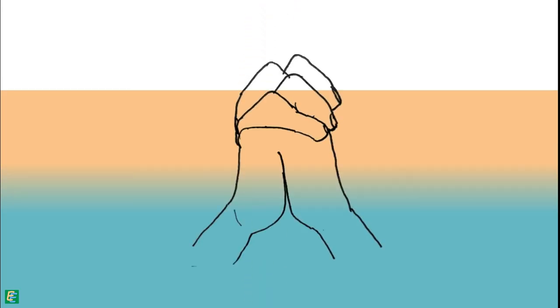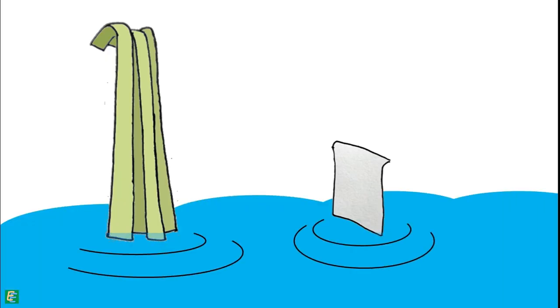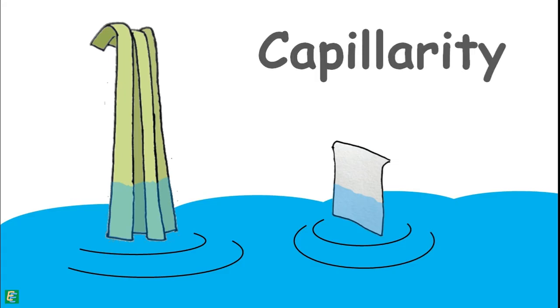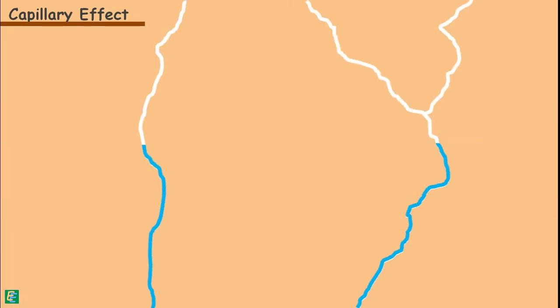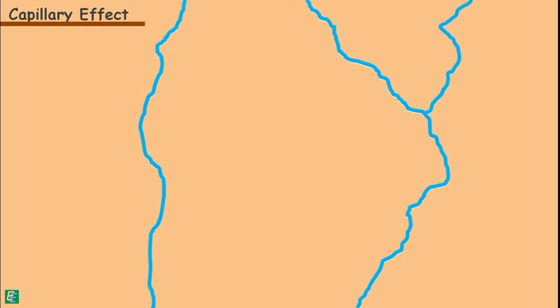Sometimes water molecules travel in an upward direction in the soil even against gravitational forces. We can see a similar effect when we immerse the edge of a cloth or a piece of paper into water — both will gradually become moist and wet up to some height above the water level. This happens because of a phenomenon called capillarity or capillary effect, which is the ability of a liquid to flow in narrow spaces without the assistance of external forces. The rise in water is called capillary water.